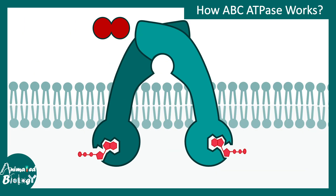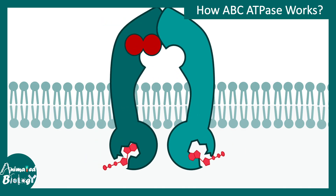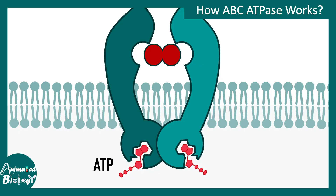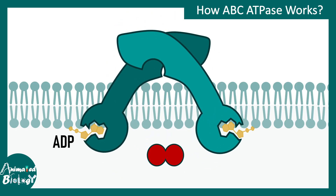Here is the ABC transporter in action. The molecule to be transported is shown in red. First, ATP binds, which triggers a conformational change that alters the shape of the entire ABC transporter, taking the molecule into the cell. ATP hydrolysis drives this conformational change and fuels the uptake. The reverse — an efflux pump taking molecules from inside and expelling them outside — is also possible for ABC transporters.